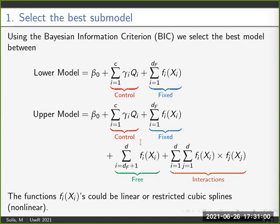In the first step, we use the Bayesian Information Criterion BIC to select the best submodel between a lower model that has control and fixed terms and an upper model that has control, fixed, free, and interaction terms. The functions fi could be linear or restricted cubic splines to add a nonlinear effect in each term.